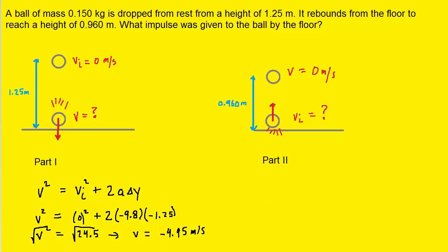So now we go over here to part two, and we perform a similar calculation, except this time we're looking for the initial velocity. So here is the same equation. For the final velocity, as noted earlier, it will be zero.